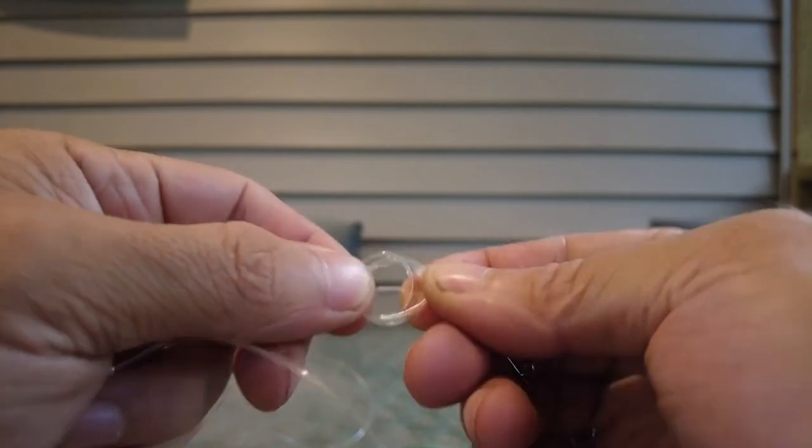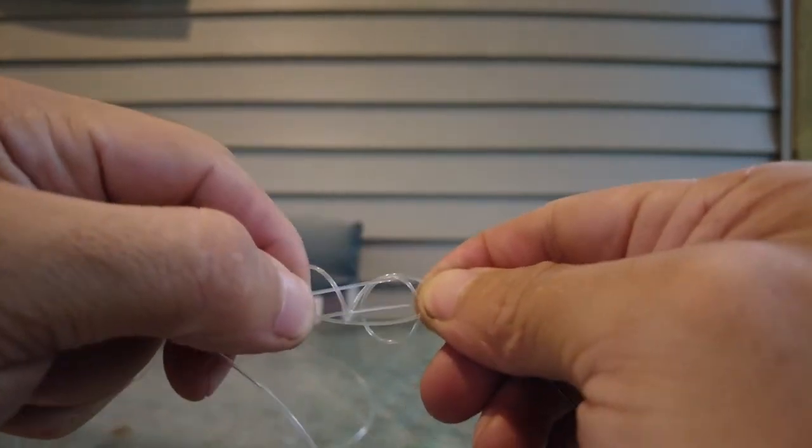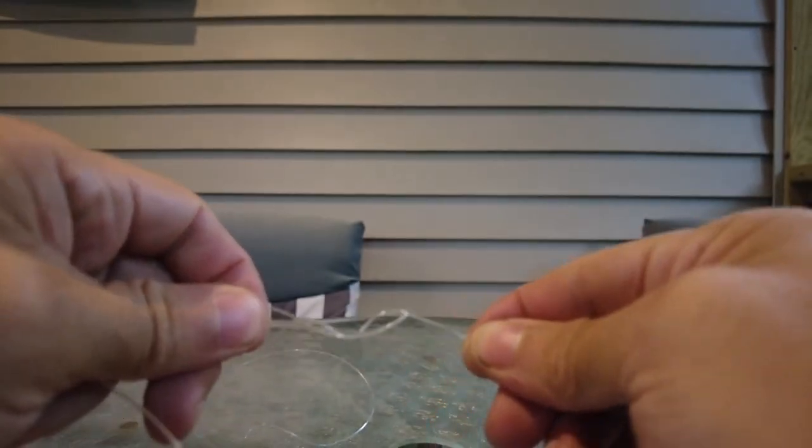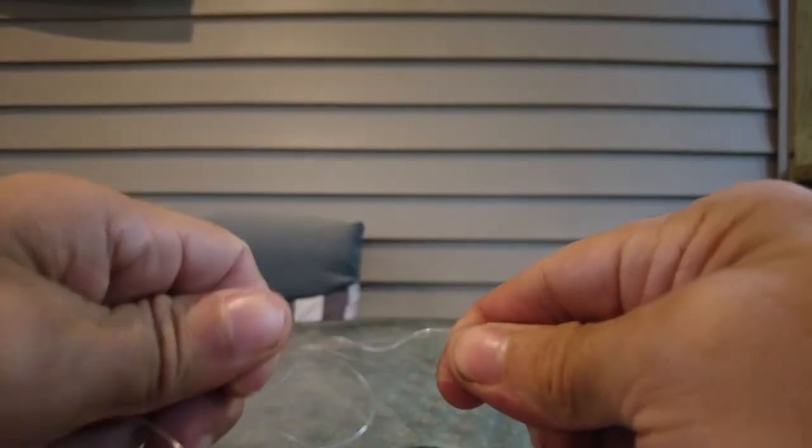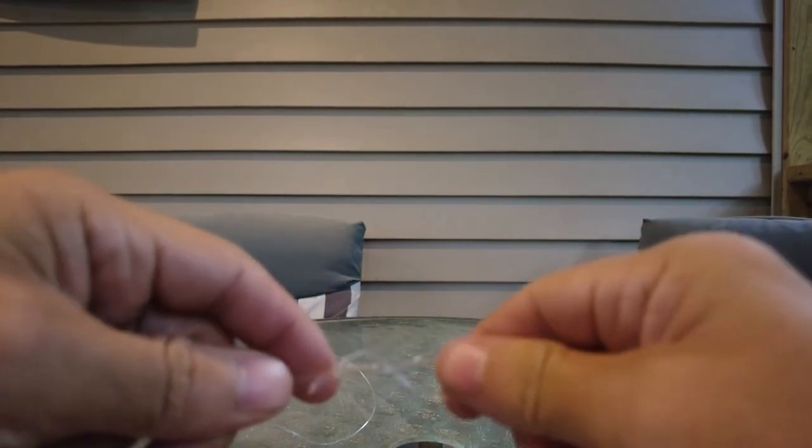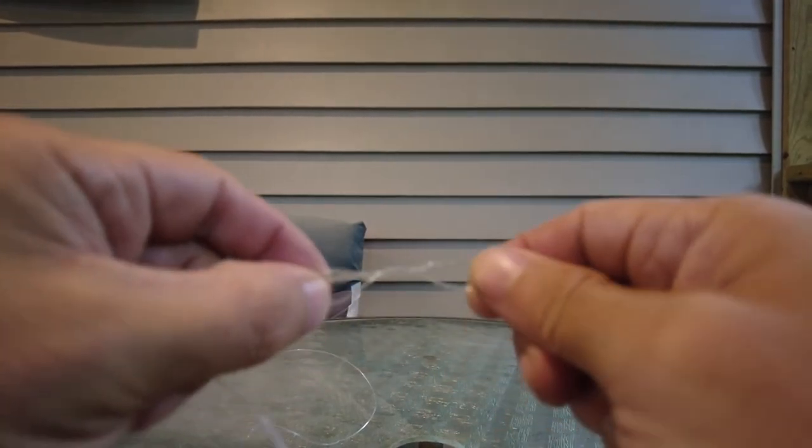We've got to take these three loops and we've got to spread them apart. When we spread them apart, you should get that right there. This looks like a bow tie.